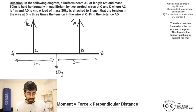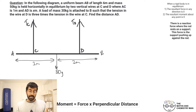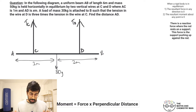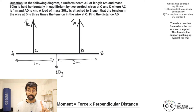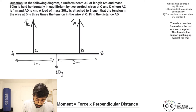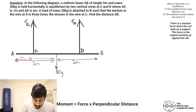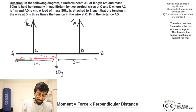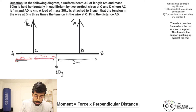The beam is held by two vertical wires at C and D. In these wires you're going to have tensions — tension at C and tension at D. They've given us that AC is one meter, so from A to C is one meter, which means C to the midpoint must be two meters.